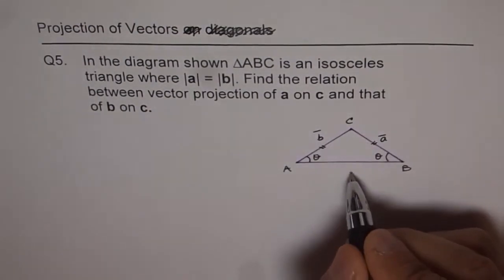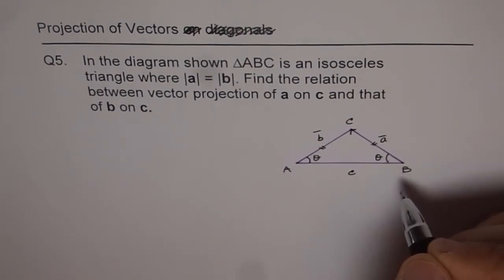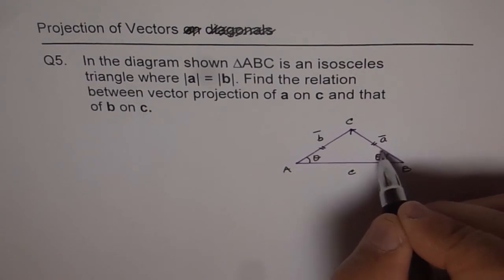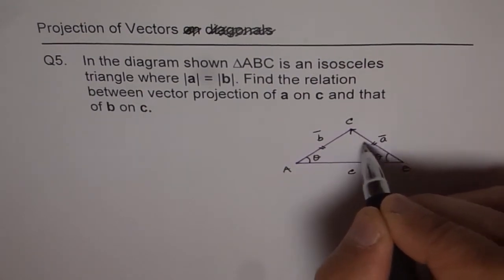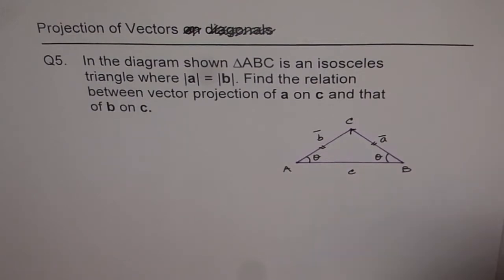And C is this side. This is C. If I say vector projection of A on C, then this is my A vector from B to C and the projection will be, let me draw here like this.